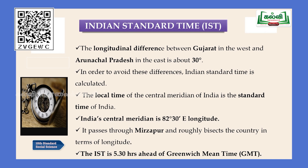The difference between one longitude to another is 4 minutes. So 30 times 4 equals 120 minutes. Since one hour equals 60 minutes, 120 divided by 60 equals 2 hours. So the longitudinal time difference between Gujarat and Arunachal Pradesh is nearly 2 hours. To avoid these differences, Indian Standard Time is calculated as the local time of the central meridian of India.